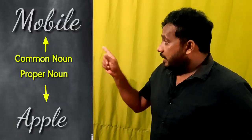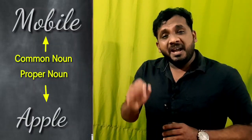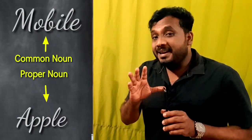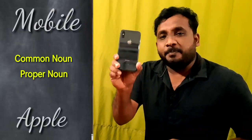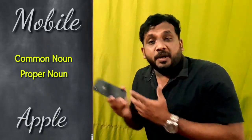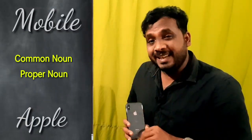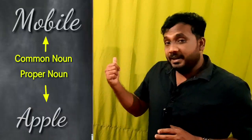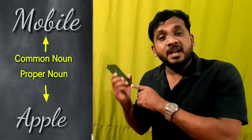You can see a mobile here. 'Mobile' is a noun that we use for all mobiles — it's a general name. But 'Apple' is a specific mobile. Another brand is Samsung. When we say Samsung, it's a proper noun. So 'mobile' is a common noun, and Apple or Samsung — any specific brand — is a proper noun.